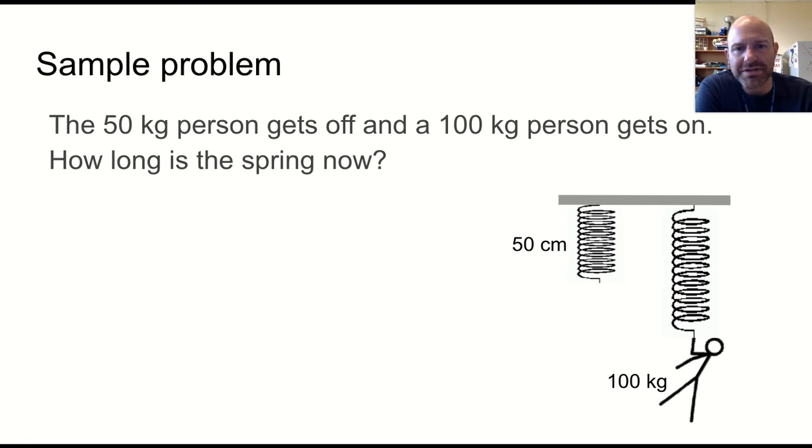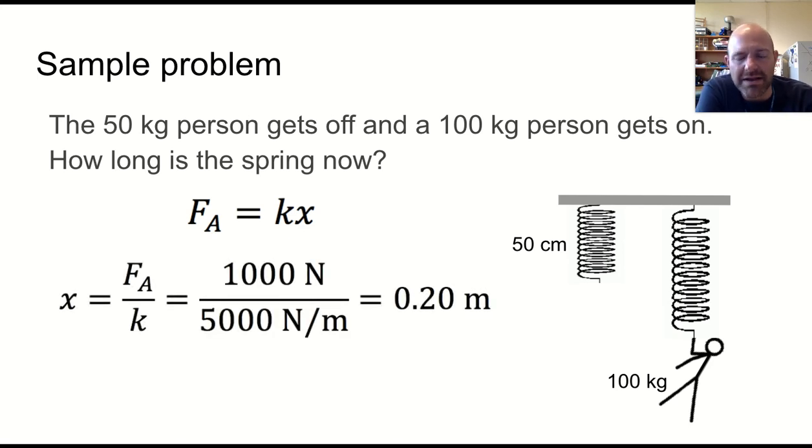What if you were to have someone else get on? A 100-kilogram person now gets on the spring. What's the spring constant or how long is the spring now? Well, the same spring constant, 5,000 newtons per meter. But this time we have 1,000 newtons of force. So we stretch 0.2 meters from equilibrium, which we add to our 50 centimeters to give us 70 centimeters of stretch.